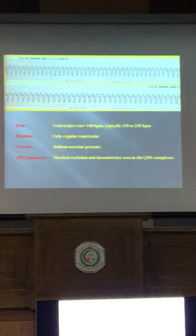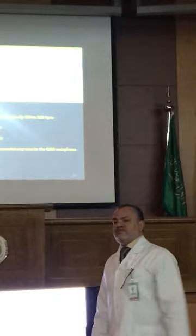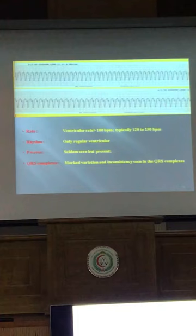V-tach. How is the P here? P is absent. As we mentioned: if P is absent, I will look at the QRS. QRS wide means it is ventricular. If the rhythm is regular, it is V-tach — which is the case here. And this is monomorphic because the QRS has the same morphology. So this is monomorphic V-tach.